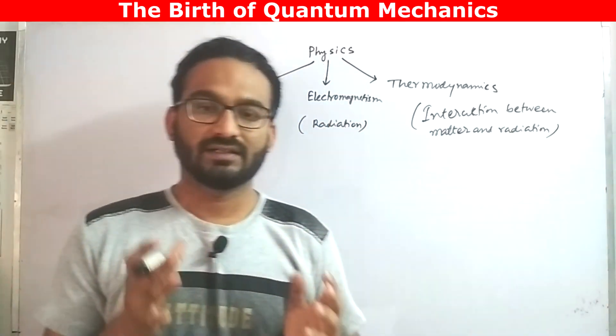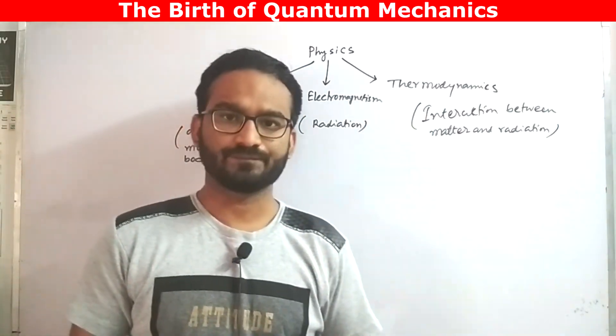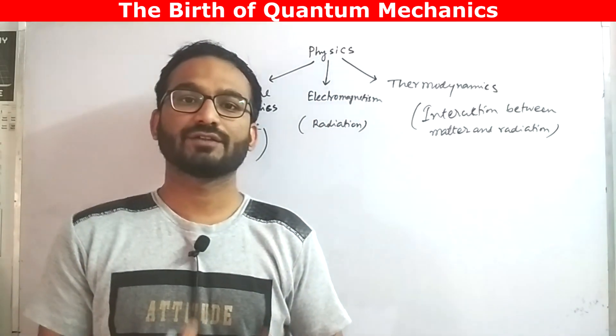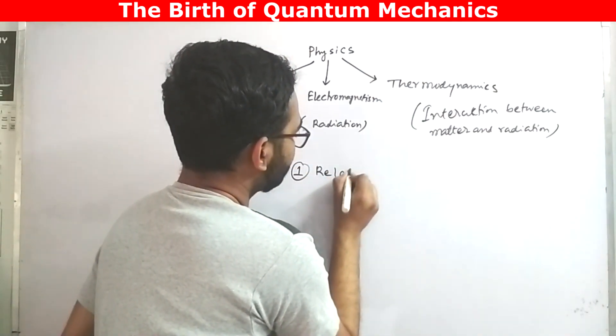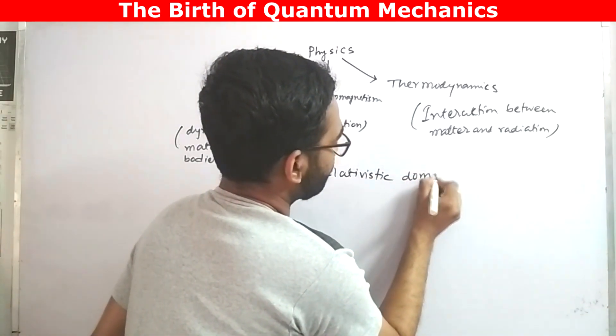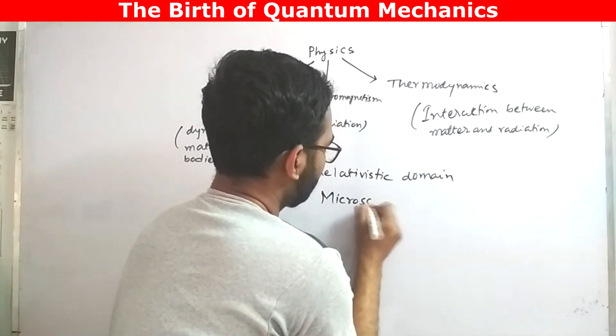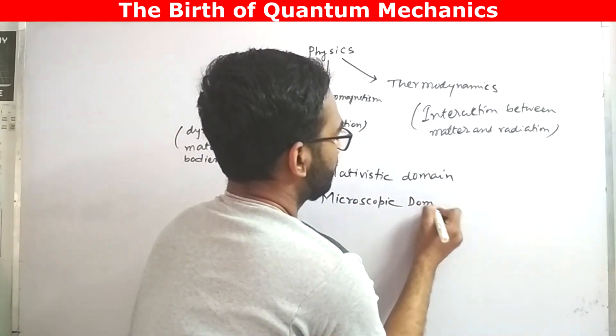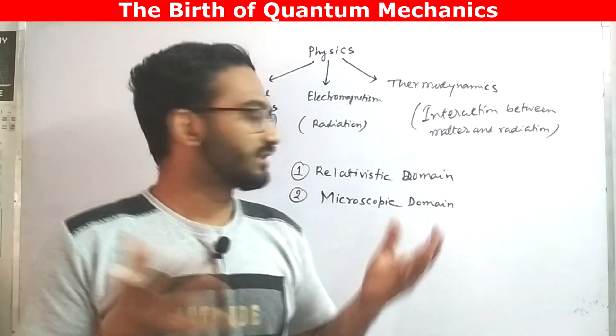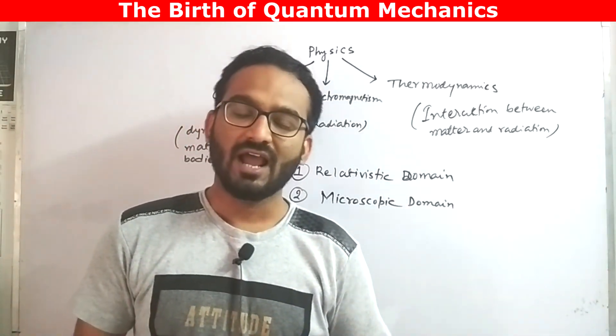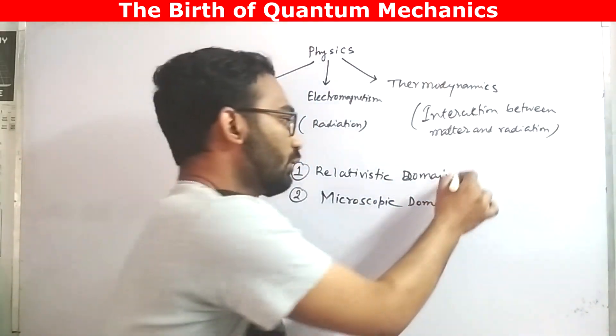Up to that time people believed that classical physics was the ultimate description of nature. But at the beginning of 20th century, classical physics faced two major challenges. One was in case of relativistic domain and another one was in case of microscopic domain. In these two areas classical physics failed to explain things using their conventional theories. And at that point we began to think about a new mechanics which will be able to explain these two domains properly.